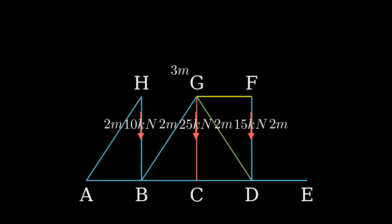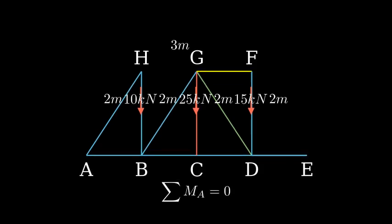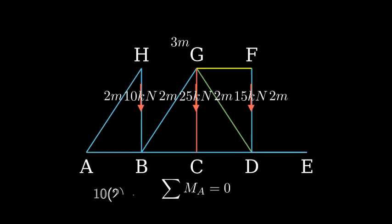Taking moments about point A, we can write that the sum of moments equals zero. This gives us 10 kilonewtons times 2 meters, plus 25 kilonewtons times 4 meters, plus 15 kilonewtons times 6 meters, minus the reaction force at E times 8 meters equals zero.